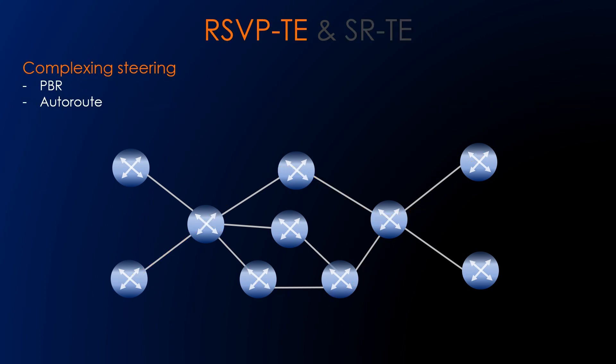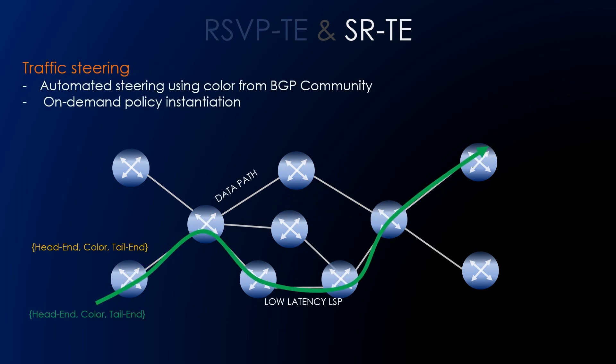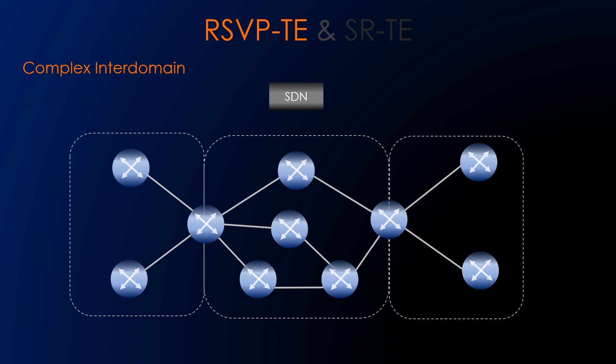There is complex traffic steering in RSVP-TE using policy-based routing or auto-route announce. In segment routing, traffic steering can be done using a color attribute from a BGP community, and we can also do on-demand policy instantiation. For example, we have two LSPs: one is a data path, the yellow one, and the other is a green one which is a low-latency LSP. Using the color attribute, we steer data traffic in the yellow path and voice or video traffic in the green low-latency path. RSVP also has complex inter-domain routing.